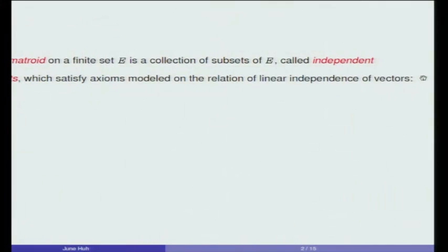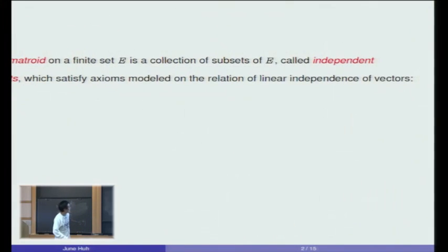I'll speak about these combinatorial structures called matroids. Basically, it's a collection of subsets of a given finite set, satisfying properties one and two that I'll show. I'll call those subsets independent sets.